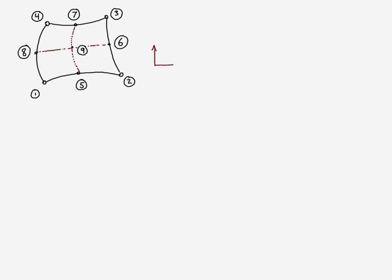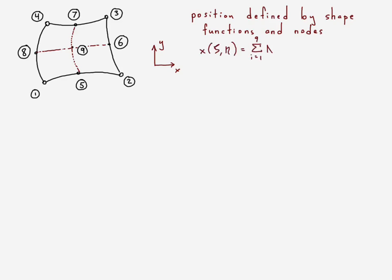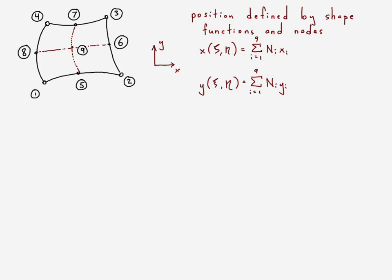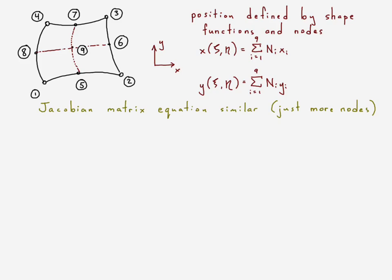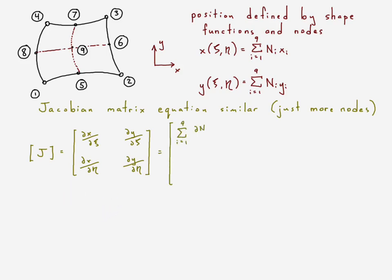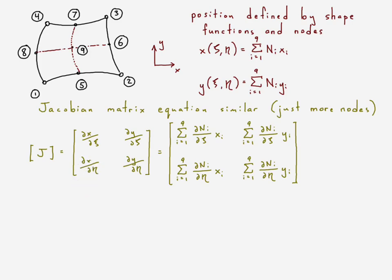Now we move on to the position functions, which describe the x and y position anywhere throughout the element. They are defined as the summation of each individual shape function multiplied by its corresponding nodal x or y coordinate — exactly the same as for the linear element, except now we have nine nodes instead of four. Using that, we can develop the Jacobian matrix with the same equation; the only difference is a longer summation because there are more nodes.